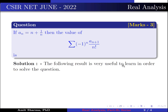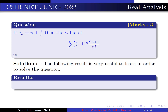The following result is very useful to learn in order to solve the question. Result: the expansion of e^(-1) is equal to 1 minus 1/1! plus 1/2! minus 1/3! plus ... and so on.